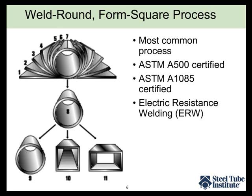The weld process creates some flashing or upset on either side of the weld — both on the outside and inside of the tube. The excess weld material on the outside is removed during manufacturing so you get a nice smooth finish on the exterior. On the inside, the weld material is typically left in place. Some manufacturers can remove it if needed — for example, when fitting one tube inside another — but generally it is not removed.